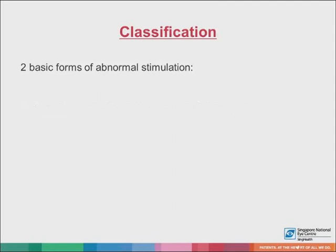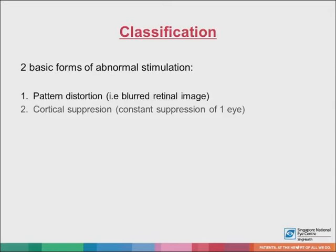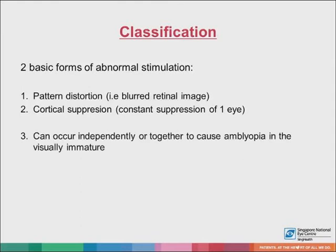Amblyopia can be classified according to the different forms of abnormal stimulation. There are two basic forms: one known as pattern distortion, which can arise from a blurred retinal image such as a refractive error or stimulus deprivation; and two, cortical suppression, such as in the presence of a strabismus with a strong fixation preference of one eye. These can occur independently or together to cause amblyopia.